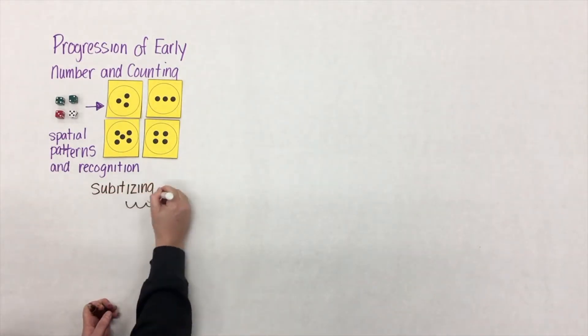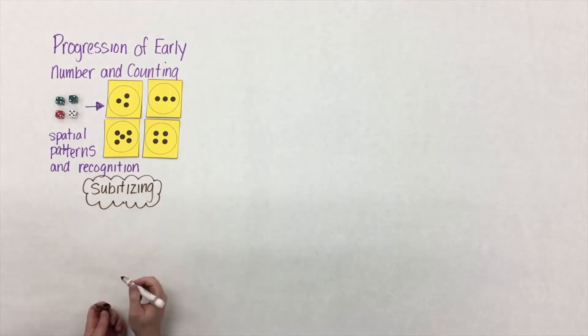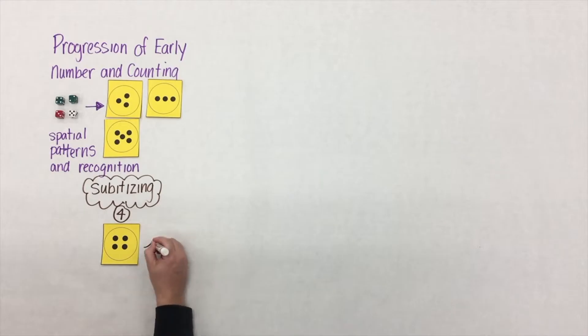This ability to recognize quantity without counting one-to-one is called subitizing. Some say sub, some say su. I just say it's magic. But here, if we were to show the number 4, a student might say 4. Yes, they know the number name, but if you ask them to prove it,